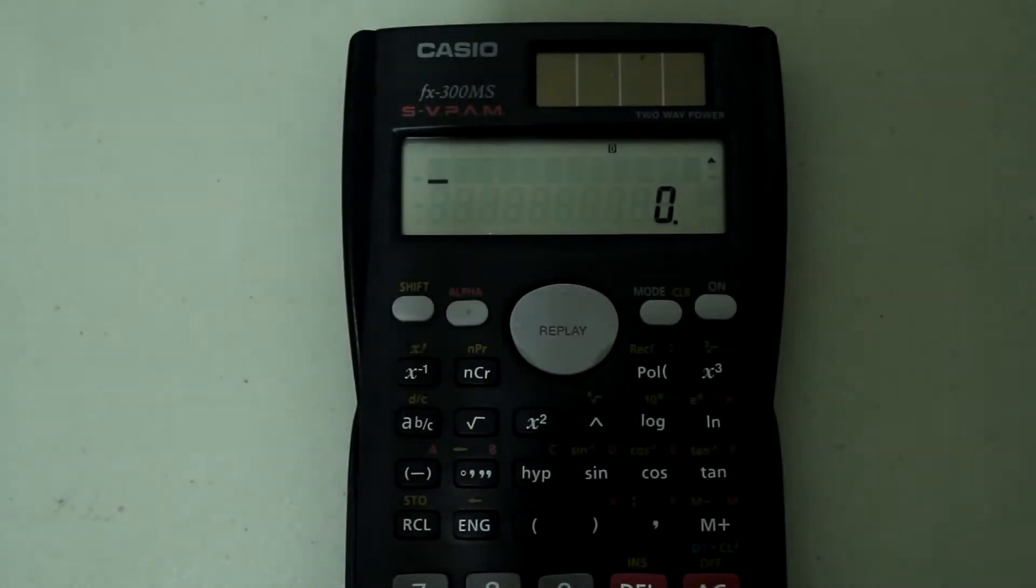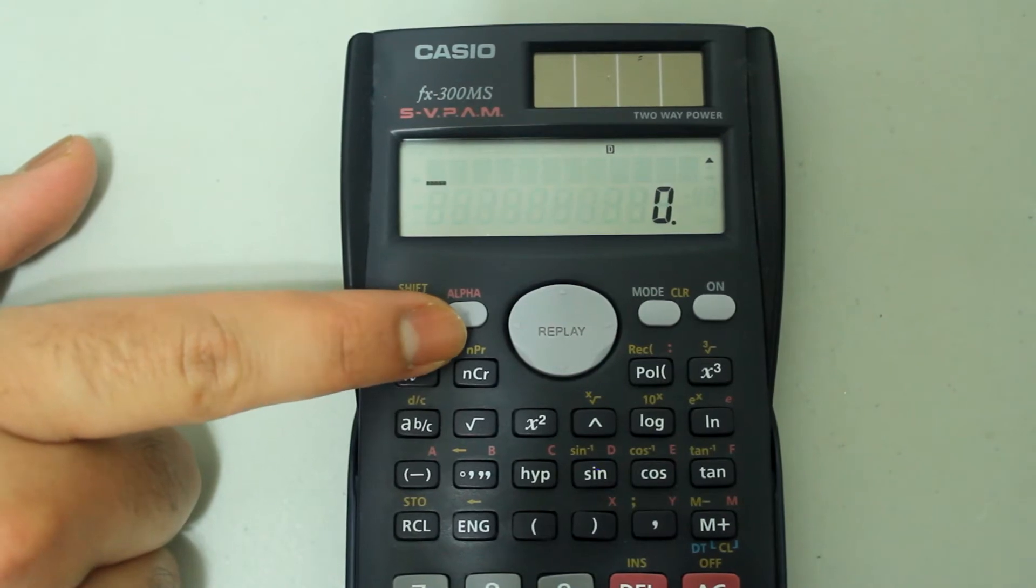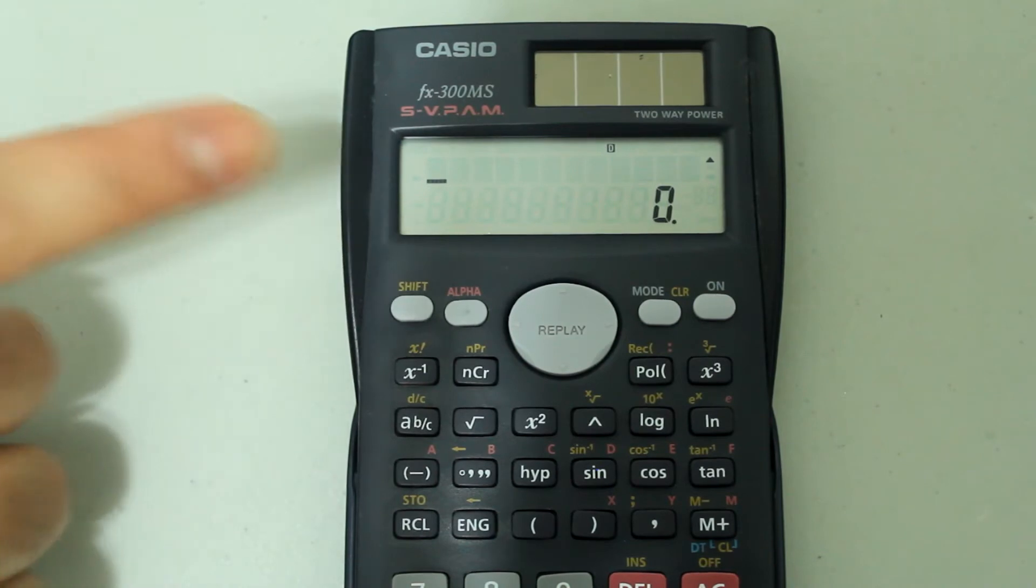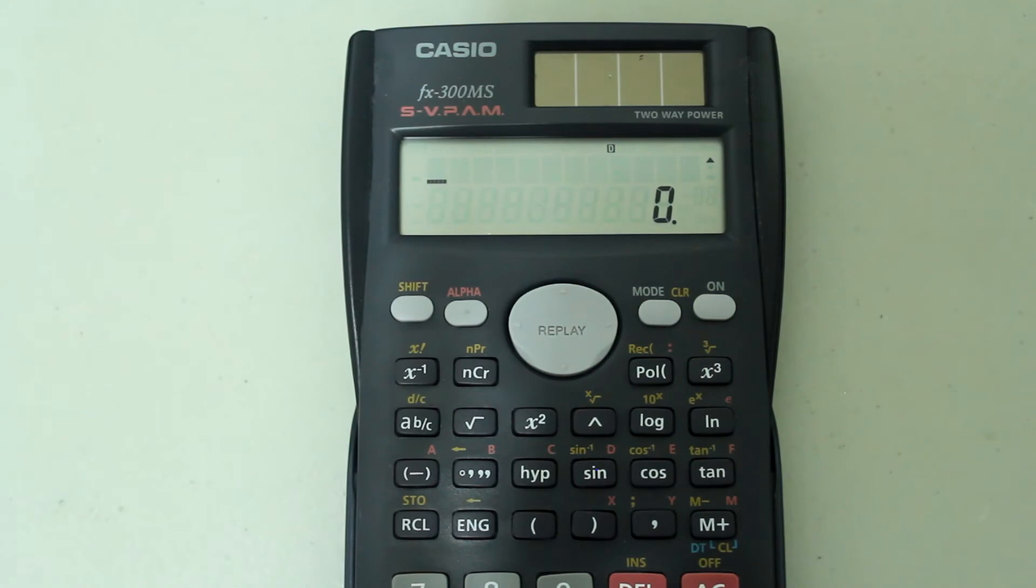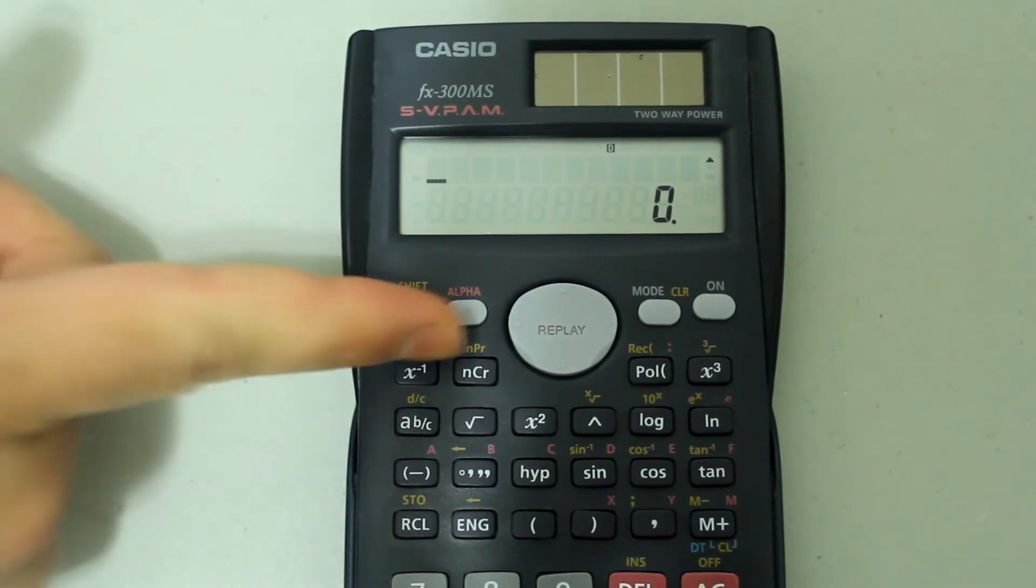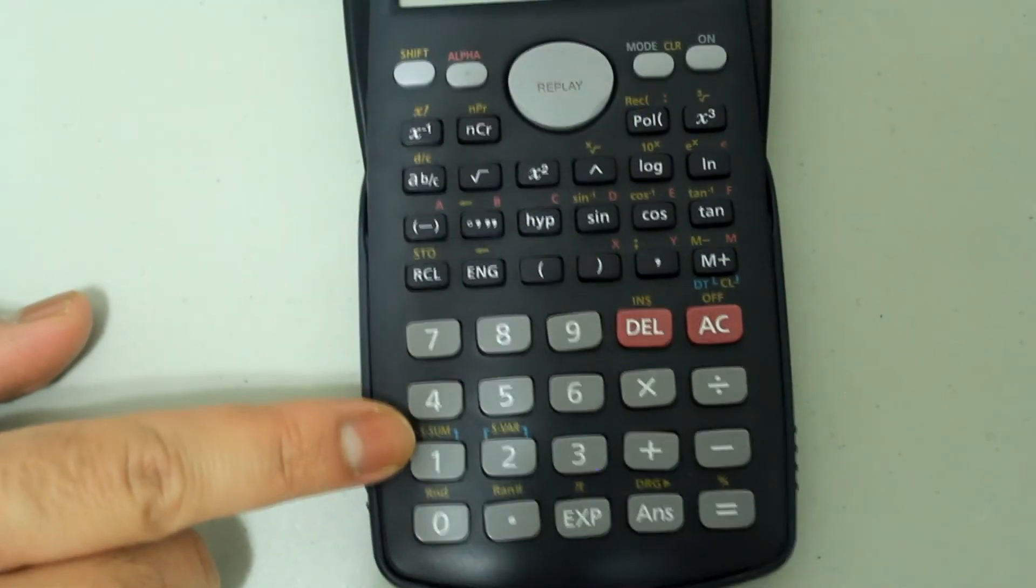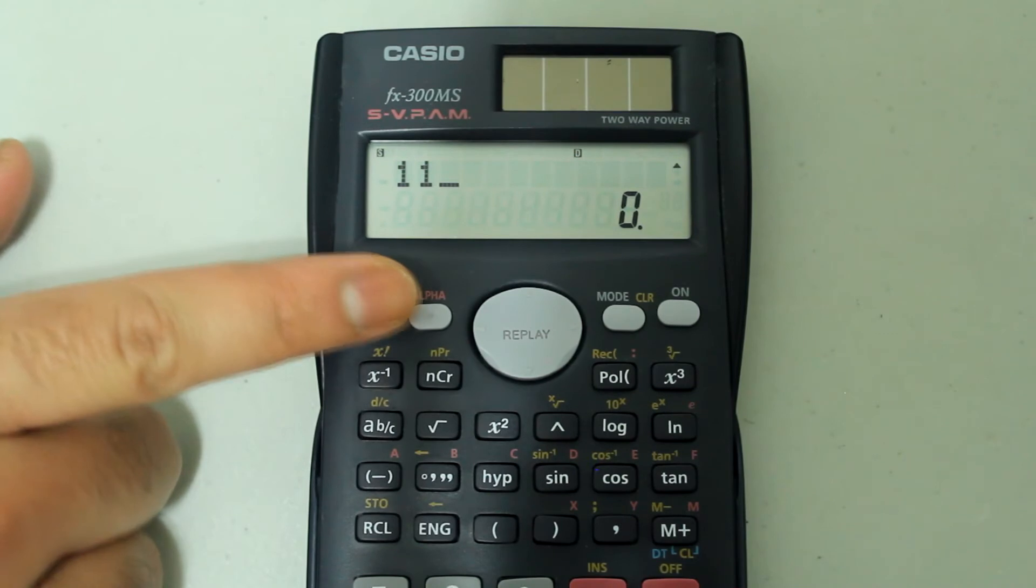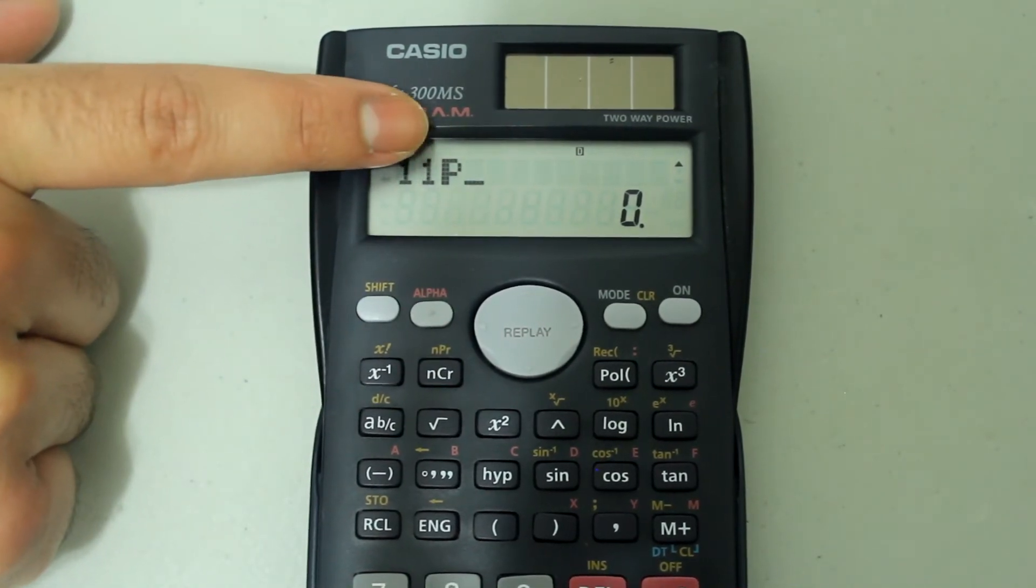Now, if we're trying to type that in on the calculator, notice we have the nPr form here for permutation right above the nCr, which is for combination. So since n is on the left and r is on the right, you have to type in the n value before you select this option. So our n value is 11. I'm going to type in 11 on the number pad. This is what the entry looks like now. Then I'm going to press shift and the combination button.